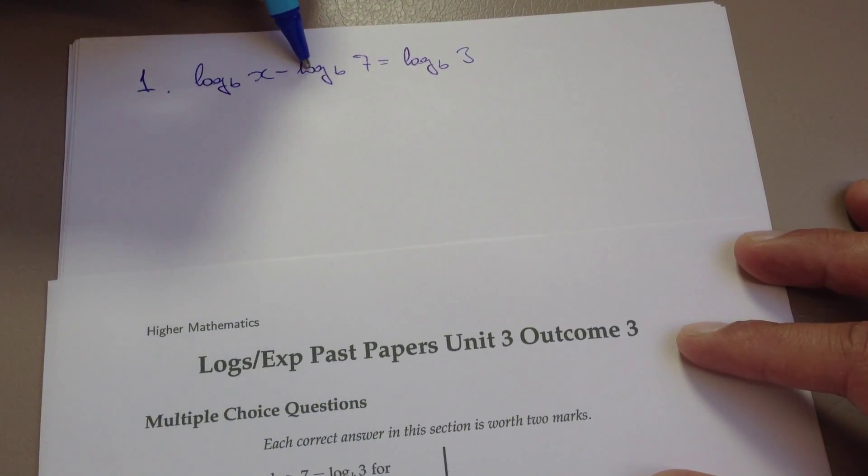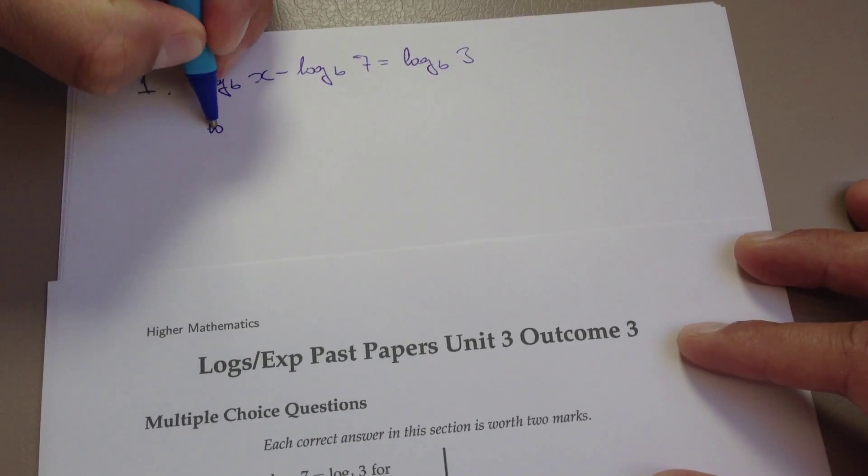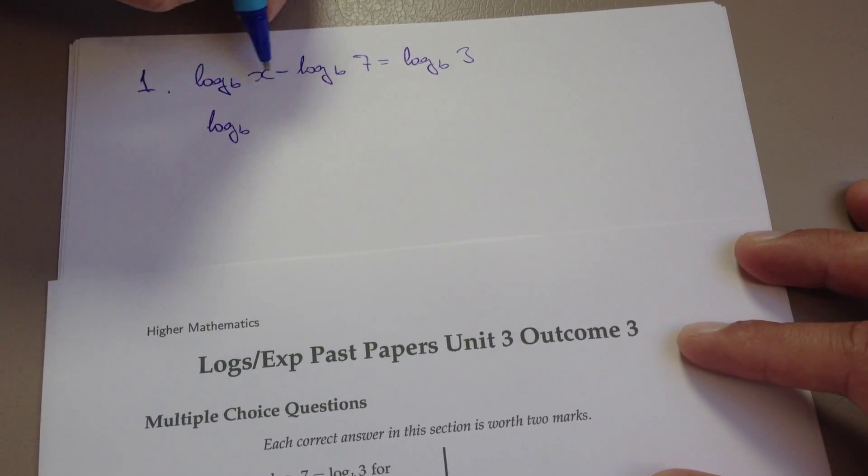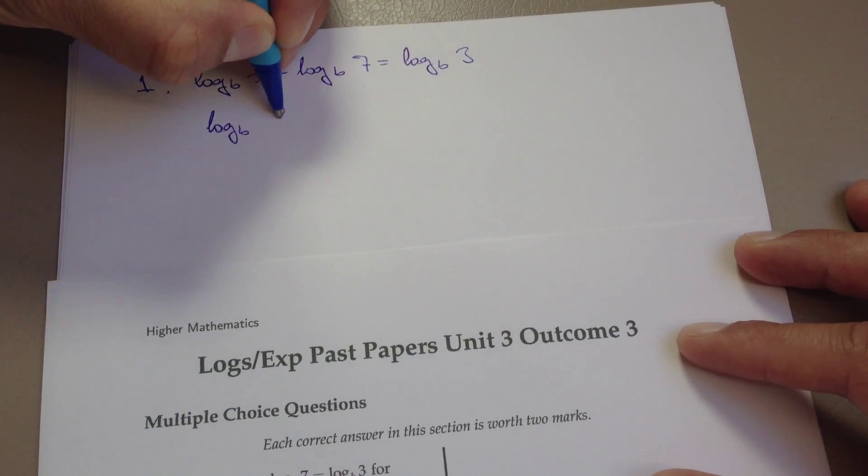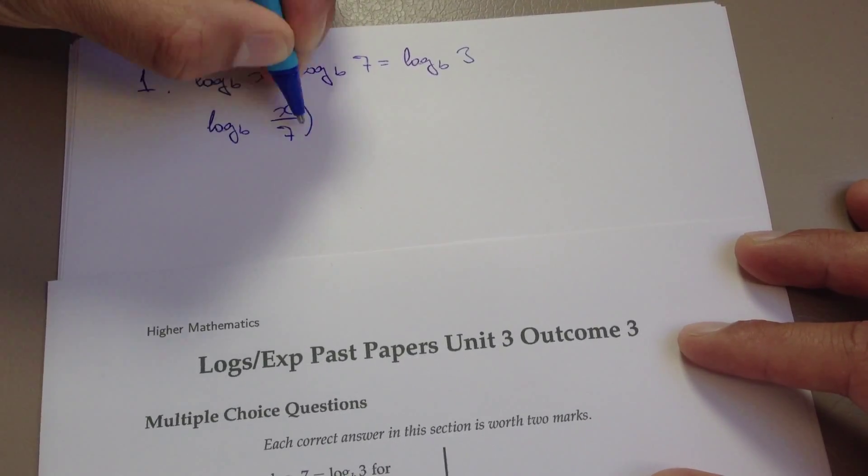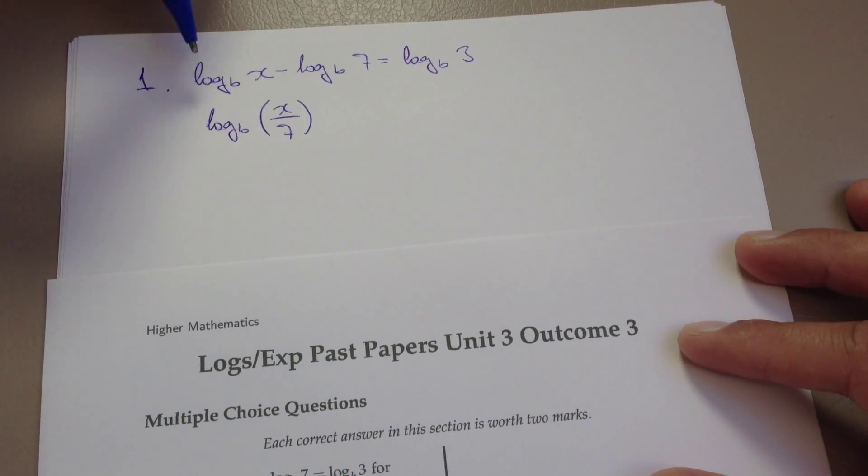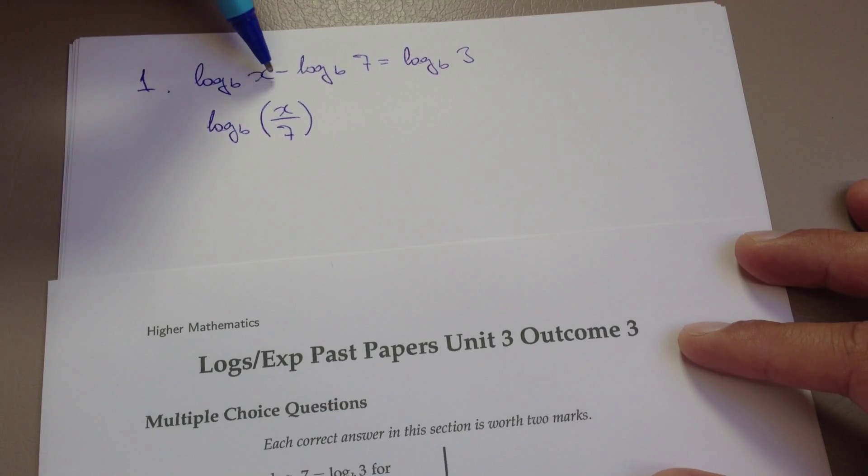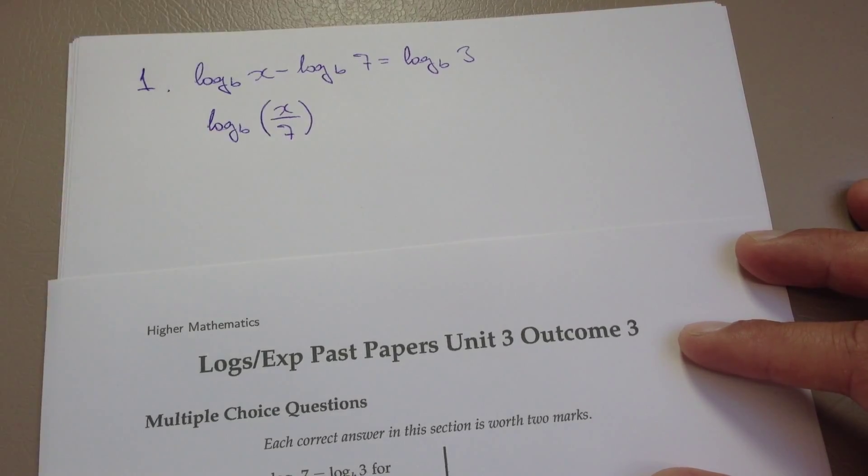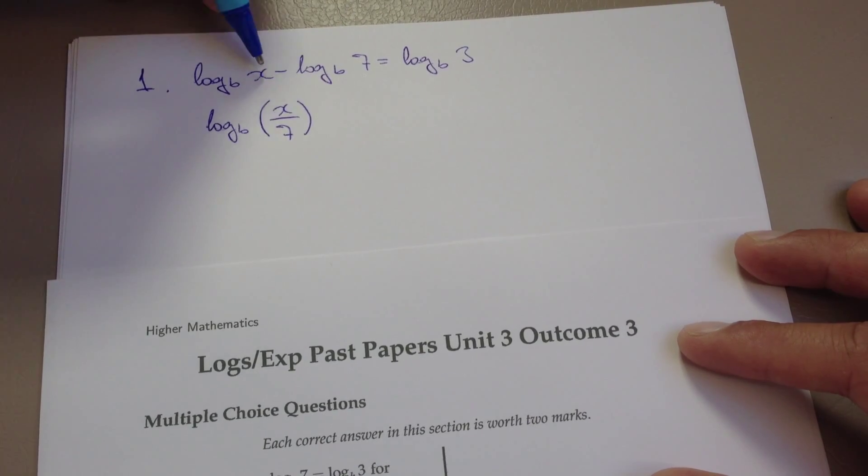Now, we have some logarithm rules that we can apply here. And this is the rule that links the writing of a logarithm to some particular base with a subtraction in it as being able to write it as a division. So effectively you've got log to the base b and you only write it once. And you can only do this rule if both bases are the same. And because they're both base b, that's absolutely fine here.